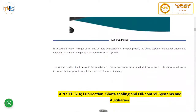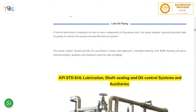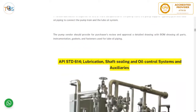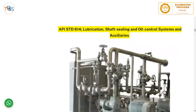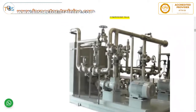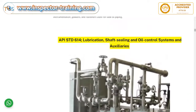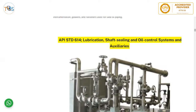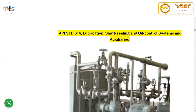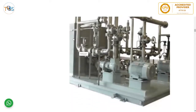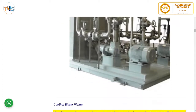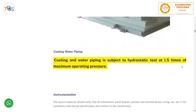Lube oil piping — if force lubrication is required for one or more components of the pump, the pump supplier typically provides the oil piping to connect the pump train and the lube oil system. The lube oil system and shaft sealing and oil control system should be manufactured according to API 615. The pump vendor should provide for purchaser review and approval a detailed drawing with bill of material showing all parts, instrumentation, gaskets, fasteners used for lube oil piping. The lube oil system works like a radiator for large pumps or turbines, with a tank, auxiliary pumps, and a piping system.